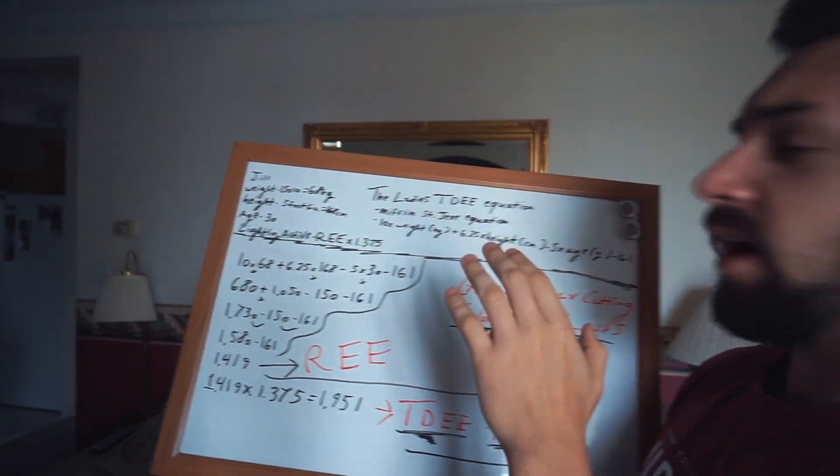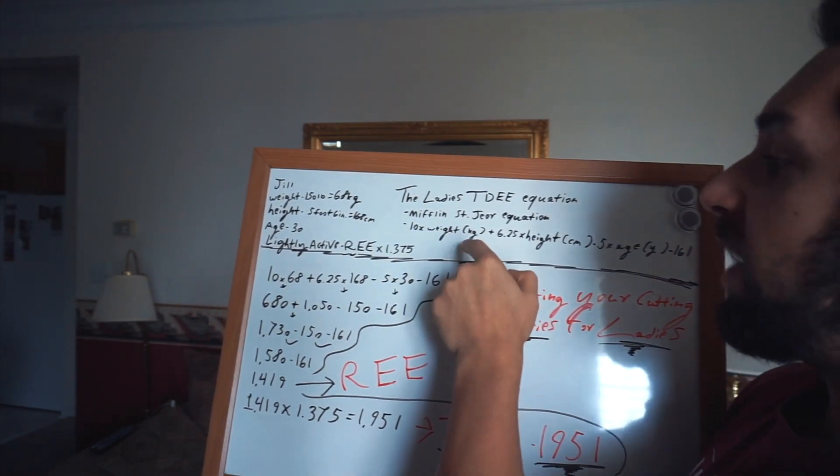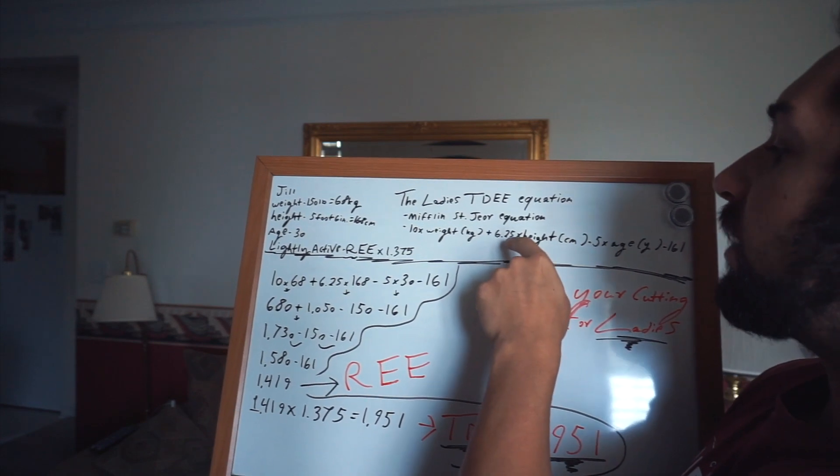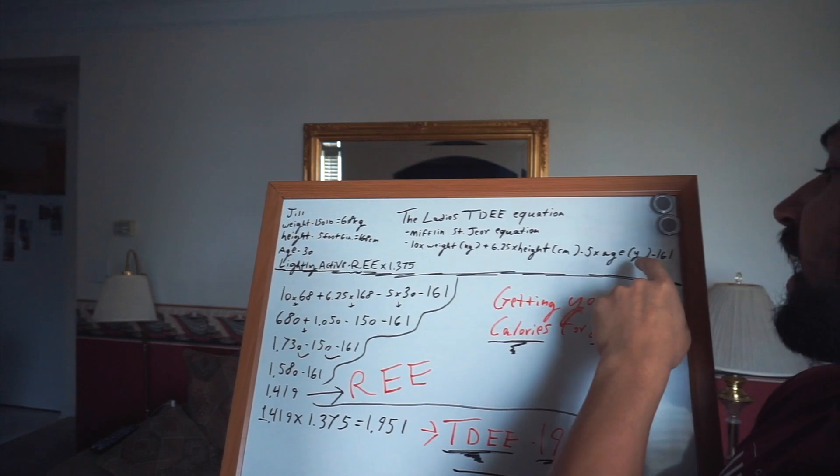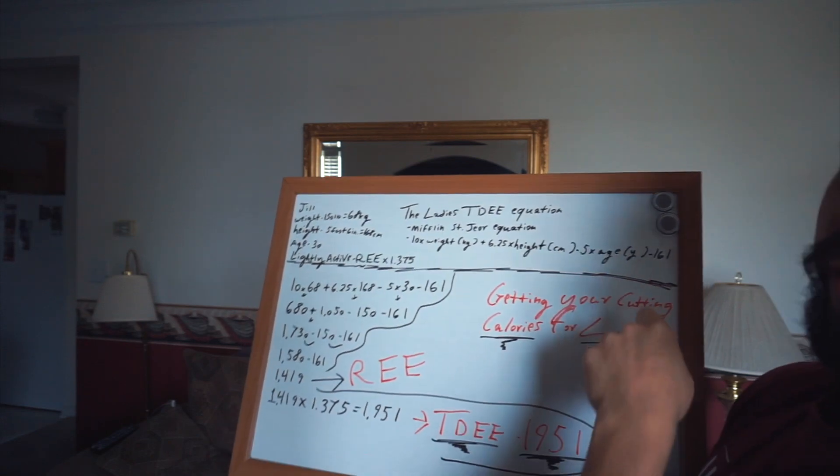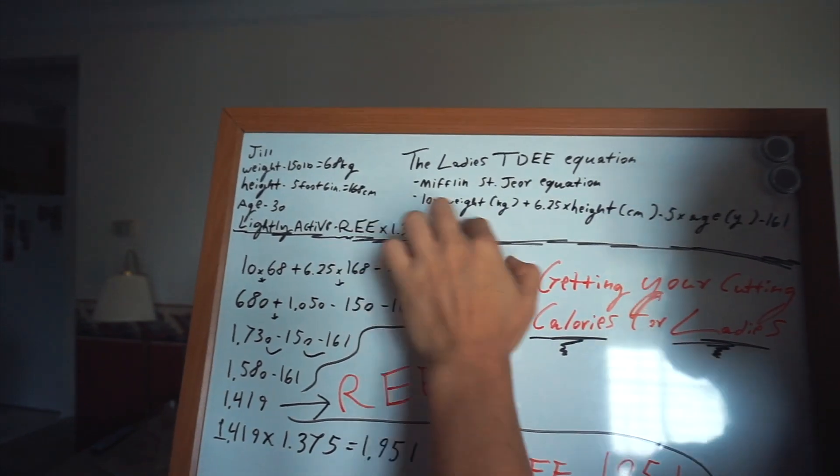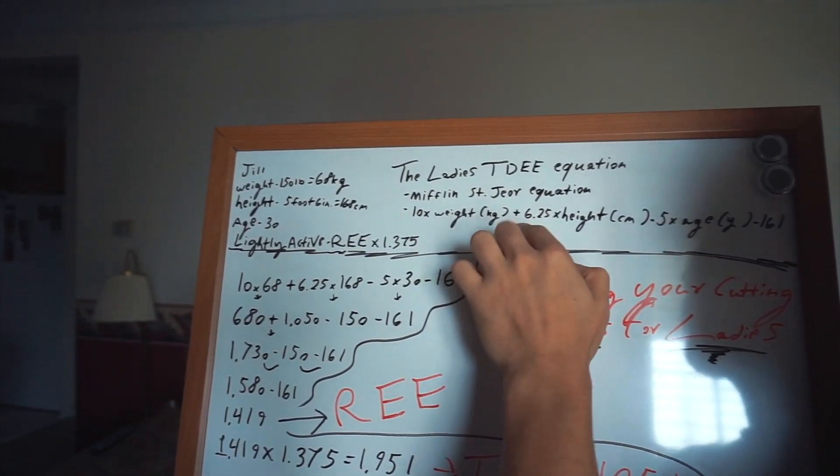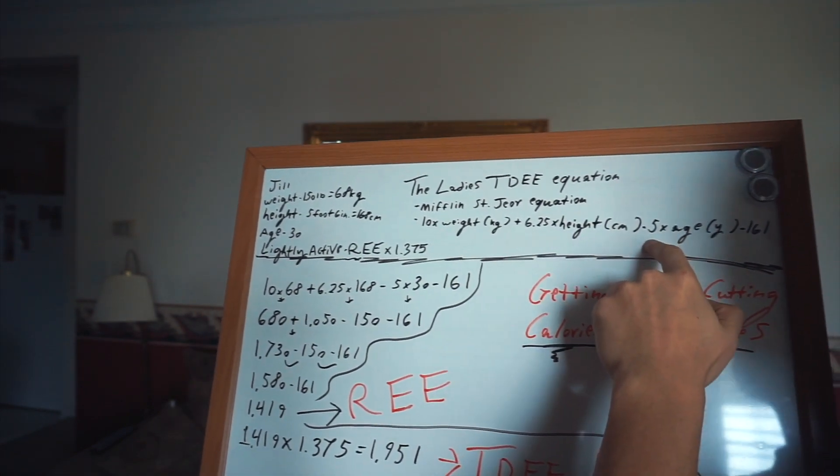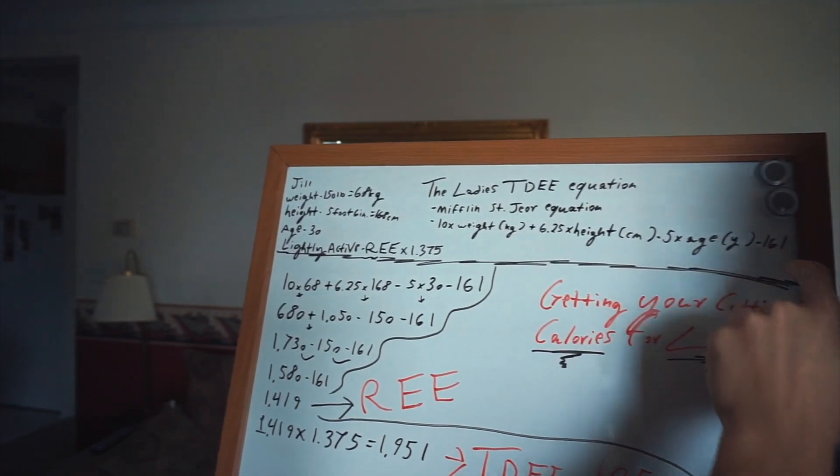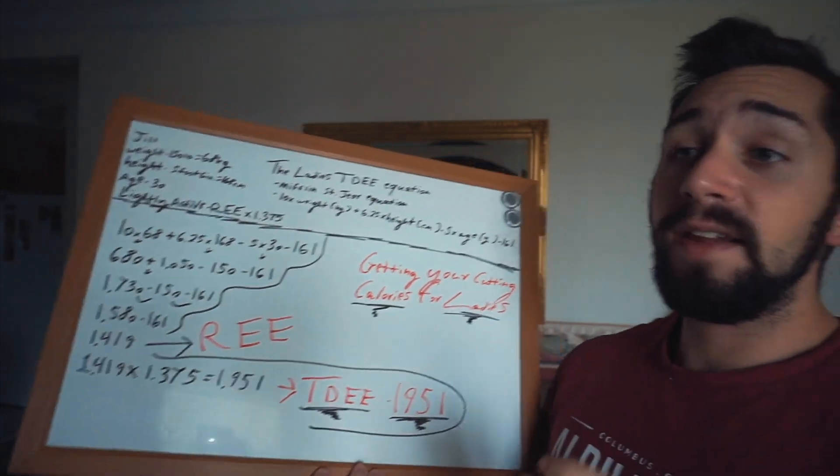Without further ado guys, the equation for the ladies to get their TDEE is 10 times weight in kilograms plus 6.25 times height in centimeters minus 5 times age minus 161. Let me go over this one more time. The TDEE equation for the ladies is 10 times weight in kilograms plus 6.25 times height in centimeters minus 5 times age in years minus 161. That is the equation to get your TDEE for the ladies.